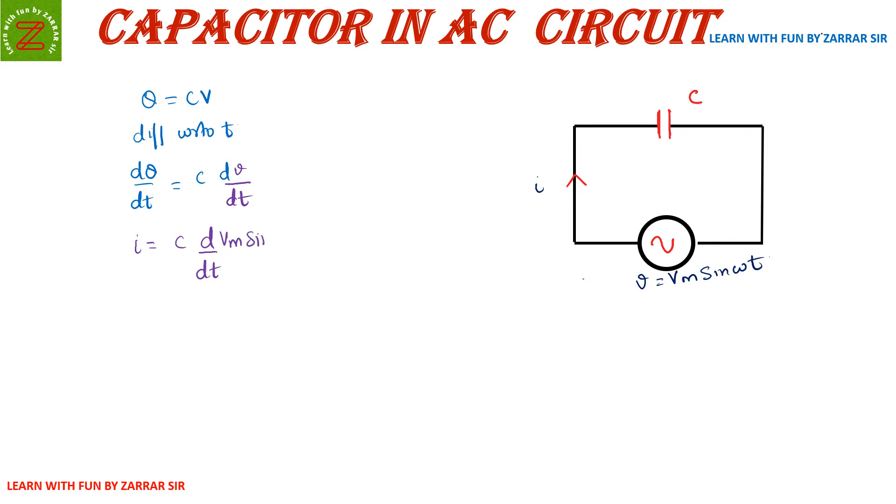Where my v is Vm sin(ωt). Now i = C × Vm - derivative of sine t is cos t, so I'll write cos(ωt) × ω. Since omega is constant, i = C × ω × Vm × cos(ωt).